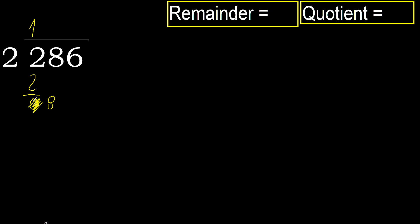Eliminate 0 on this side, bring down 8. 2 multiplied by 4 is 8, which is not greater. Ok, subtract.